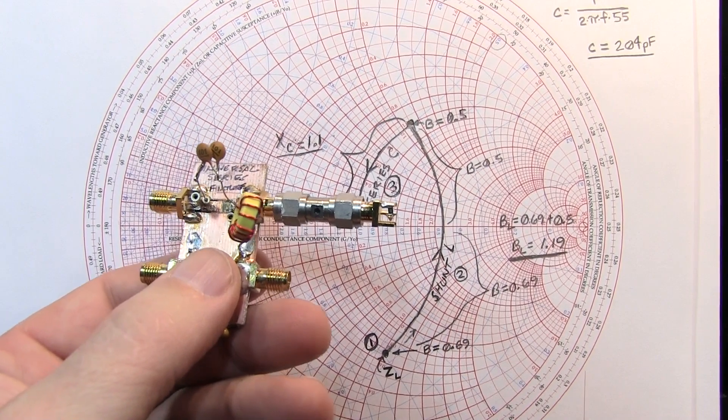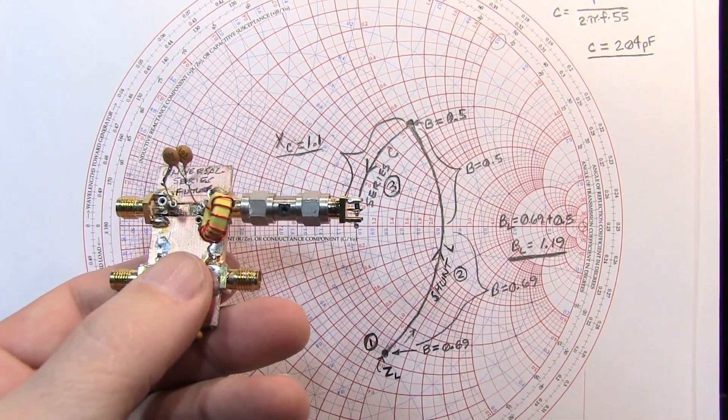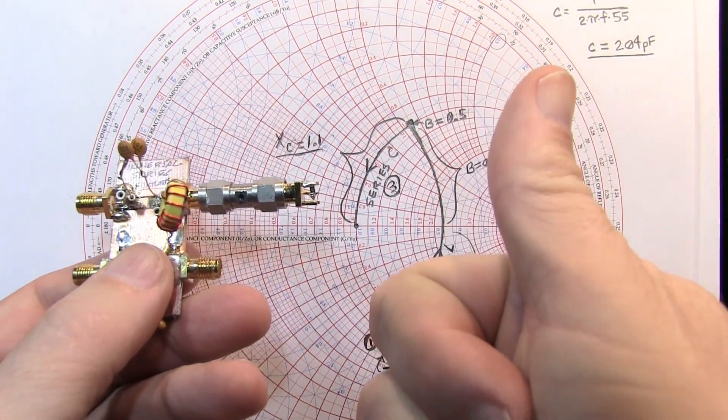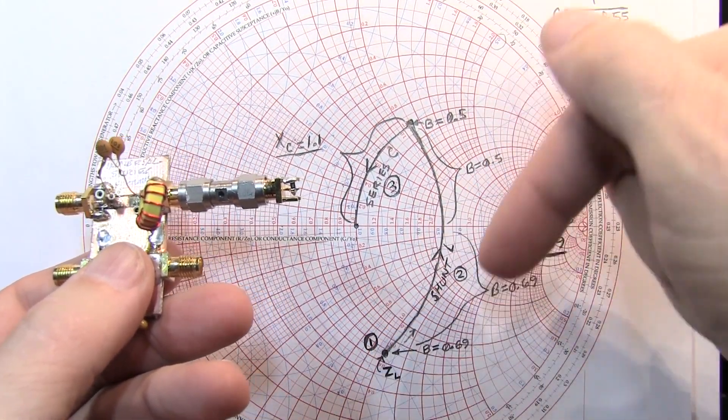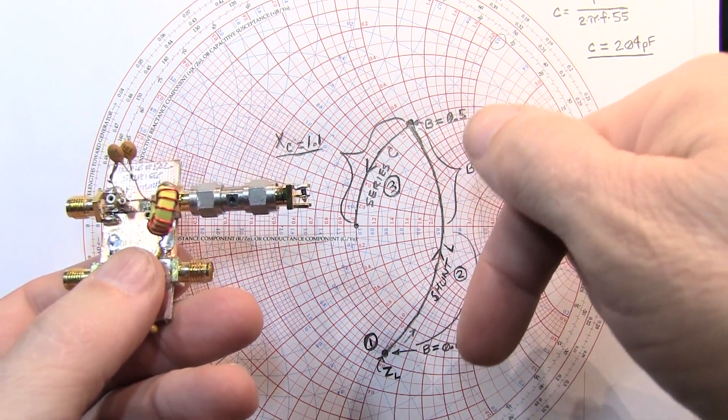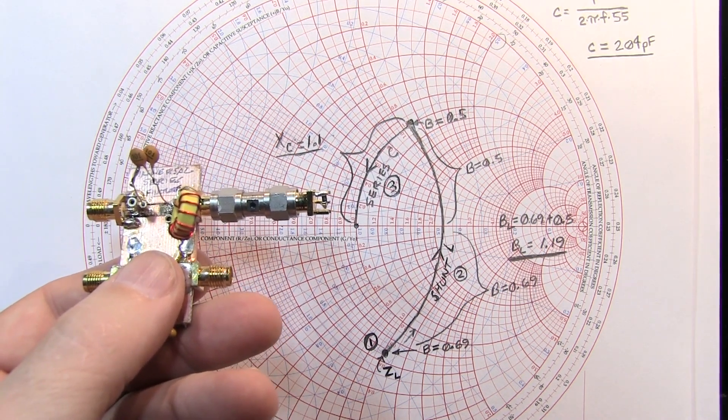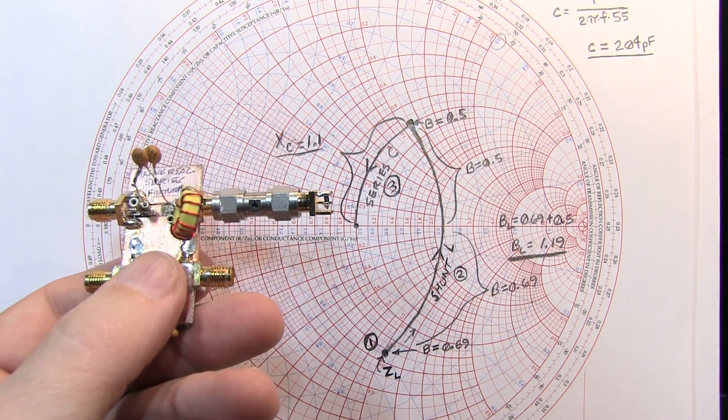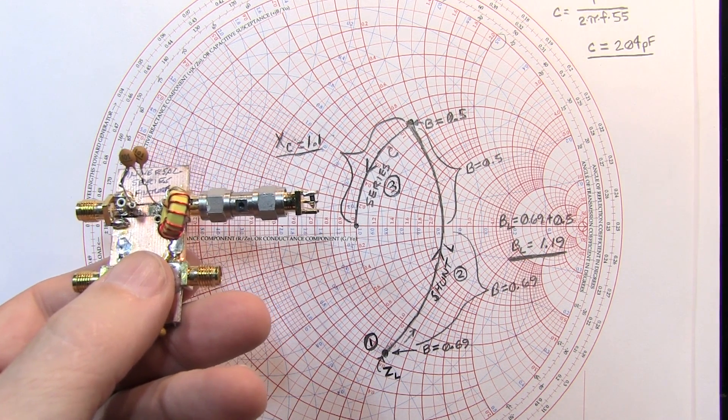I hope you enjoyed this video to take a look at how to design an L matching network using the Smith chart. If you like what you see, please give me a thumbs up. As always, my notes from the video will appear as a link to a PDF file in the show notes on the YouTube page just below the video here. If you haven't subscribed to the channel already, please do so. I'd love to hear your comments down below. Thanks again, as always, for watching.